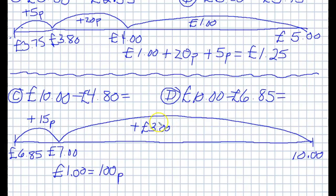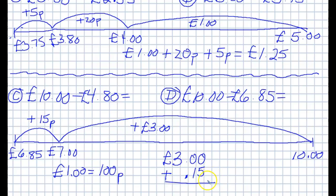So now, as I said before, we just add up this amount and this amount. So we've got three pounds plus fifteen pence. You'll notice I don't write the pence separately here — I'm writing it as a decimal number, so I don't need to write the pence, and when you've already written the pound symbol you don't also have to write the p. So three pounds fifteen is our final answer.